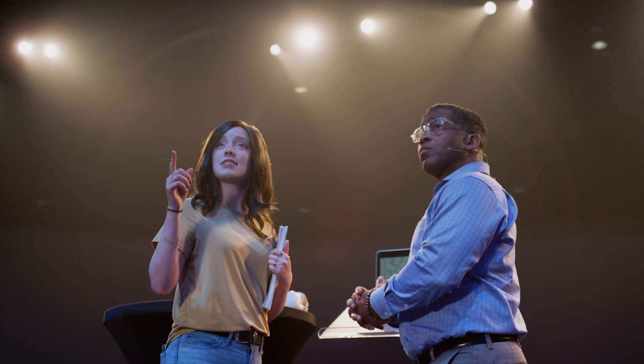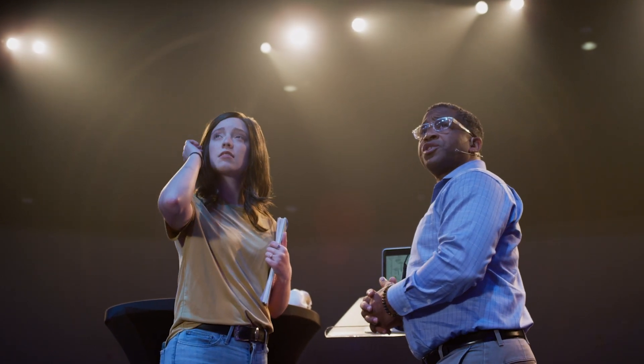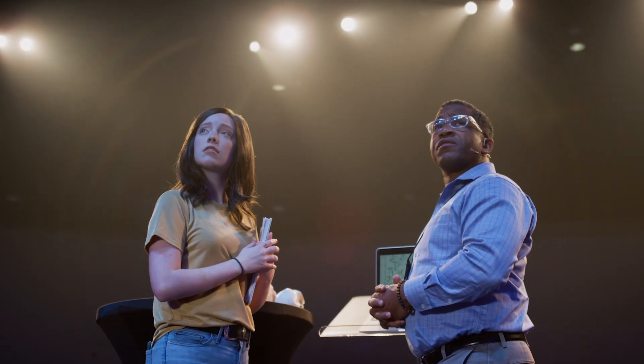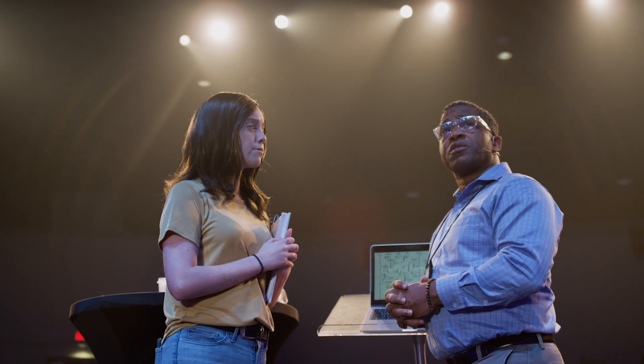Can you explain this slide to me? Sure. It shows the idea of the human evolution tree over time. This chart is from Professor Klein at Stanford. It was published on the 200th anniversary of Darwin's birth to show how much we've learned about human evolution since Darwin's time.